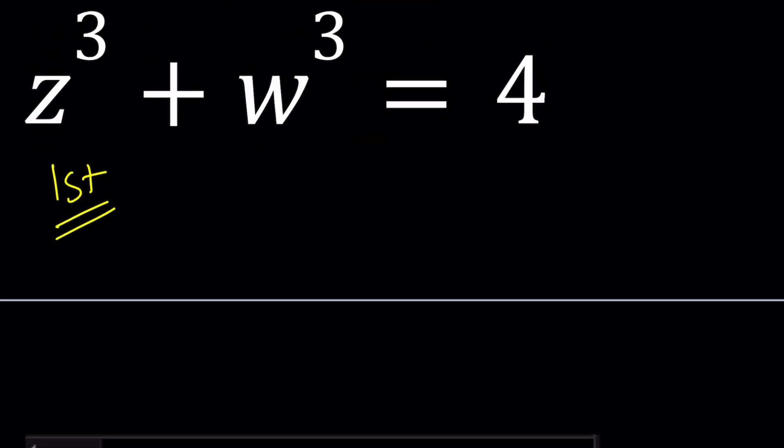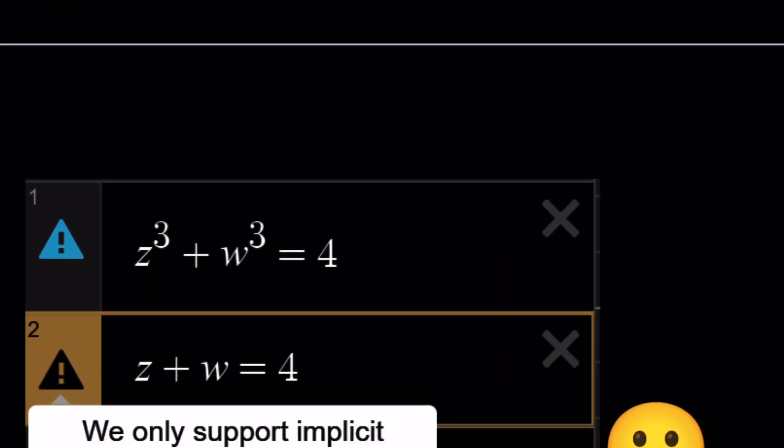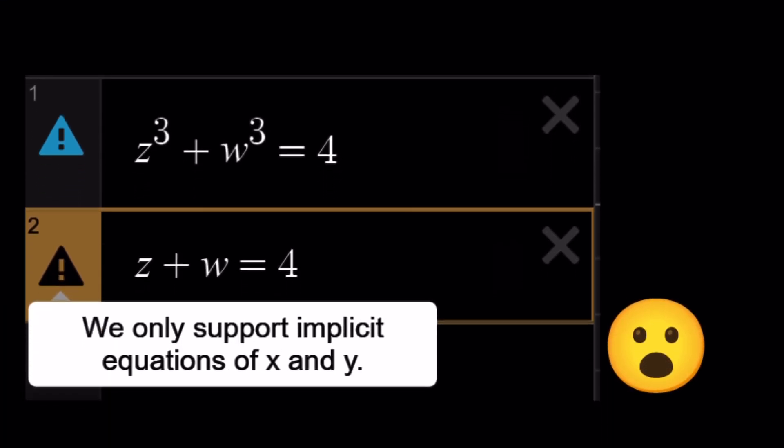Before I start with the first method, I kind of try to graph these things, right? And I'm like, uh-oh, unfortunately Desmos only supports implicit equations of X and Y. Isn't that sad? I should be able to graph this. But anyways, now let's go ahead and take a look at the first method first.